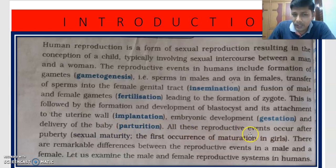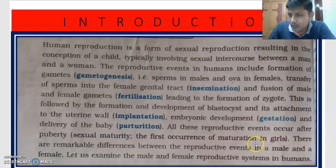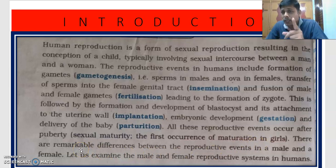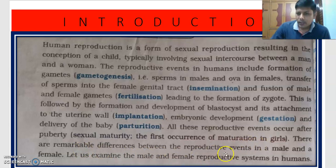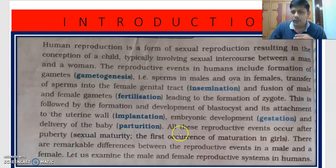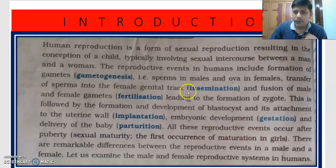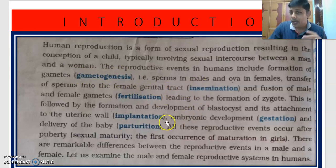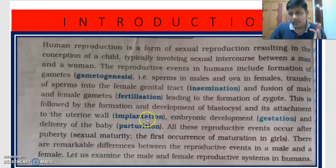All these reproductive events occur after puberty, that is sexual maturity. There are remarkable differences in the reproductive events of males and females. For example, gestation, parturition, implantation, and fertilization all occur in the female. But formation of gametes occurs in both. Sperm formation continues throughout life in males — even in old men sperms are formed — but formation of ova stops at around 50 years of age.